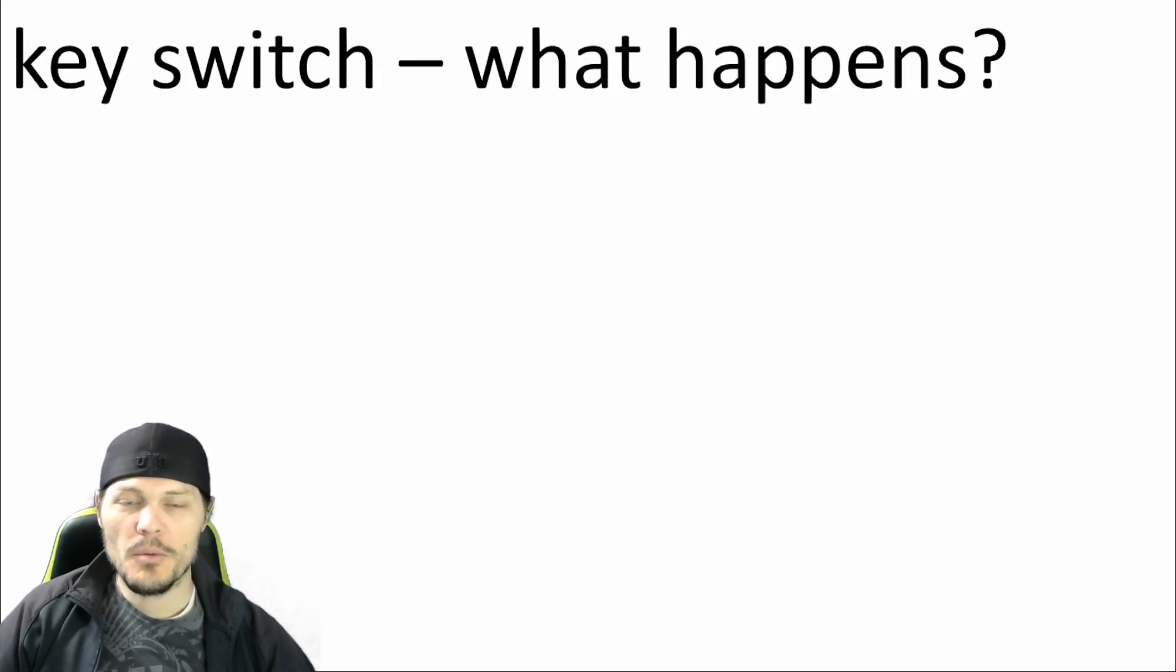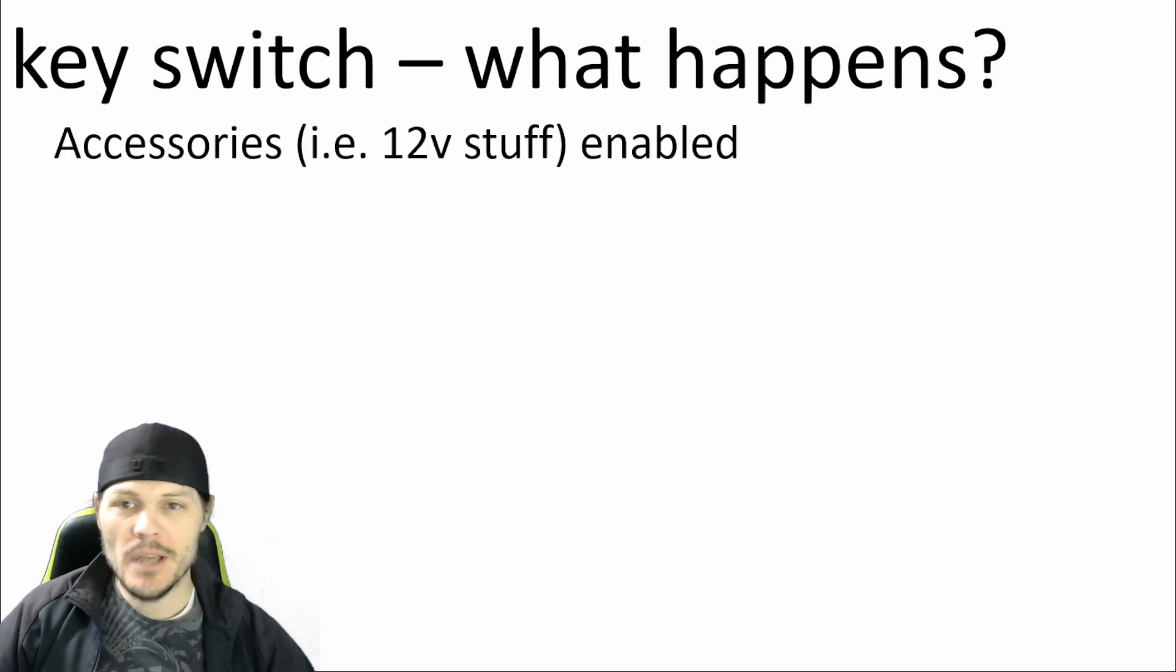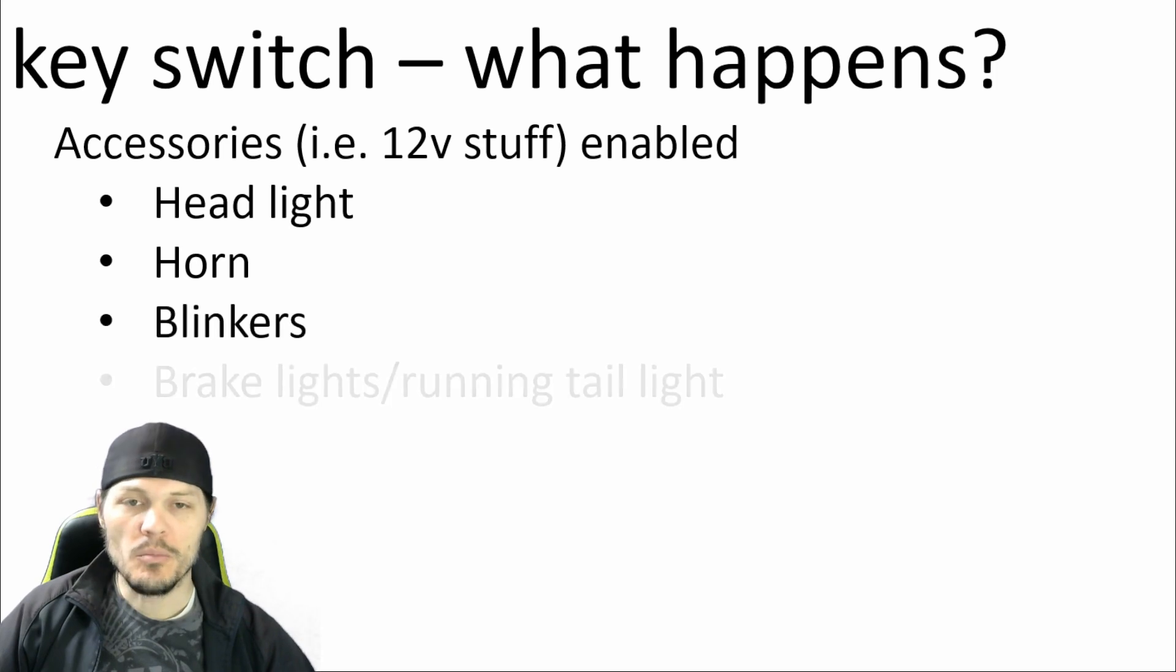Enough of the intro. Let's talk about what's supposed to happen when I turn my key switch. What I want to happen is kind of the same as what's on a regular motorcycle. When the key switch is on, the 12 volt stuff becomes enabled. That's like the headlight, horn, the blinkers, the brake lights, all those things start working when the key is in the on position. And additionally, the coil on the contactor, that electromagnet that if we were to energize it, would close the contactor, that's going to be on the 12 volt system. If you don't know what I'm talking about, check out my video about the contactor.